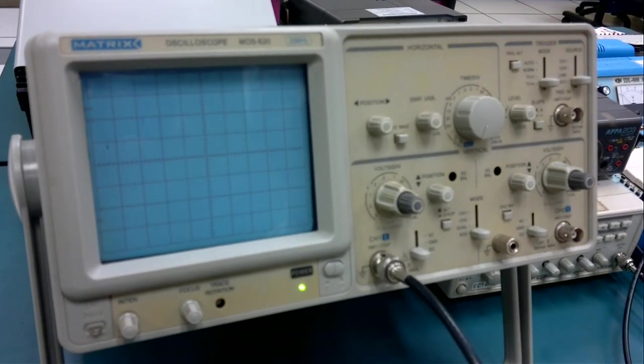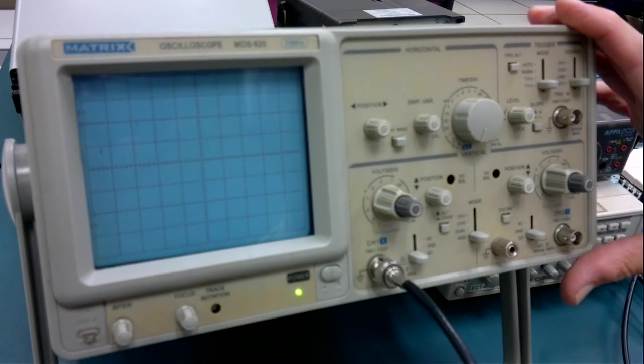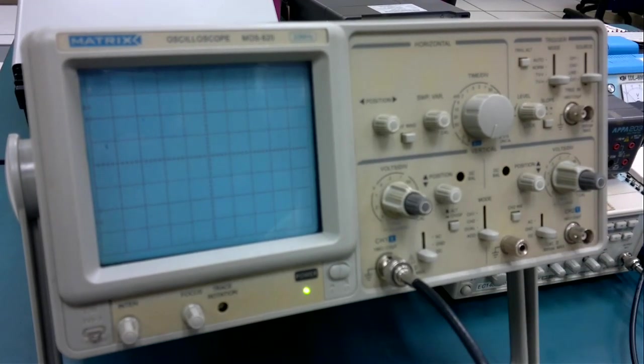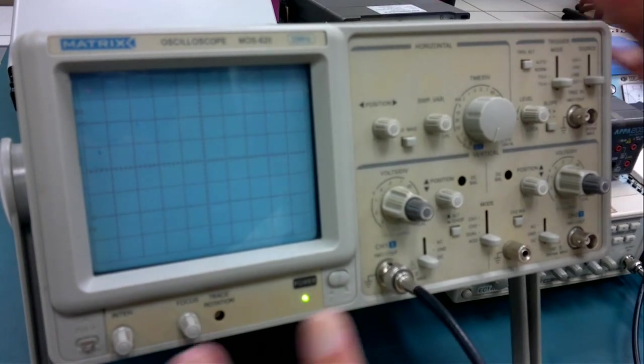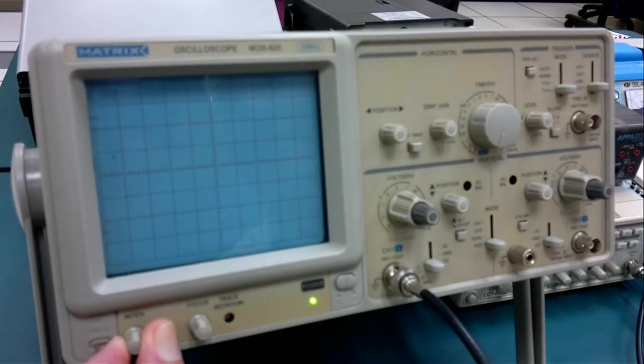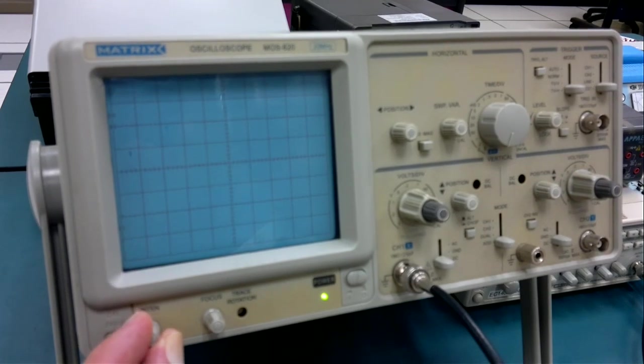Now, when you come along to a lab with this oscilloscope, it could be used by anybody and it could be completely messed up. So let's just see, it's switched on, no trace at all. So let's turn the intensity up, right the way in and back a bit.